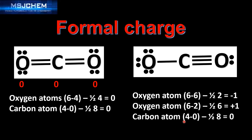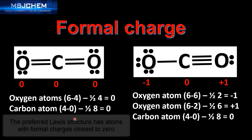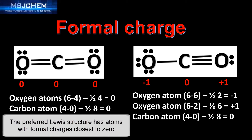Finally the carbon atom: four valence electrons minus zero non-bonding electrons minus half of eight, giving a formal charge on the carbon atom of zero. So in this Lewis structure the left oxygen has a formal charge of negative one, the carbon has a formal charge of zero, and the right oxygen has a formal charge of plus one. The preferred Lewis structure is the one with formal charges closest to zero, so the Lewis structure on the left is the preferred Lewis structure for carbon dioxide.